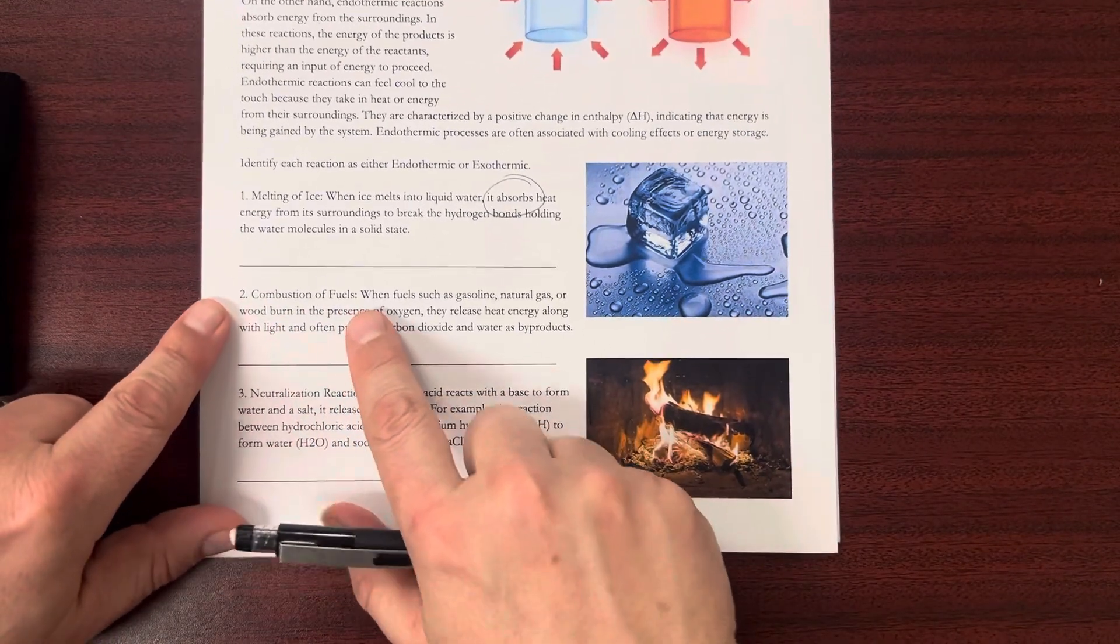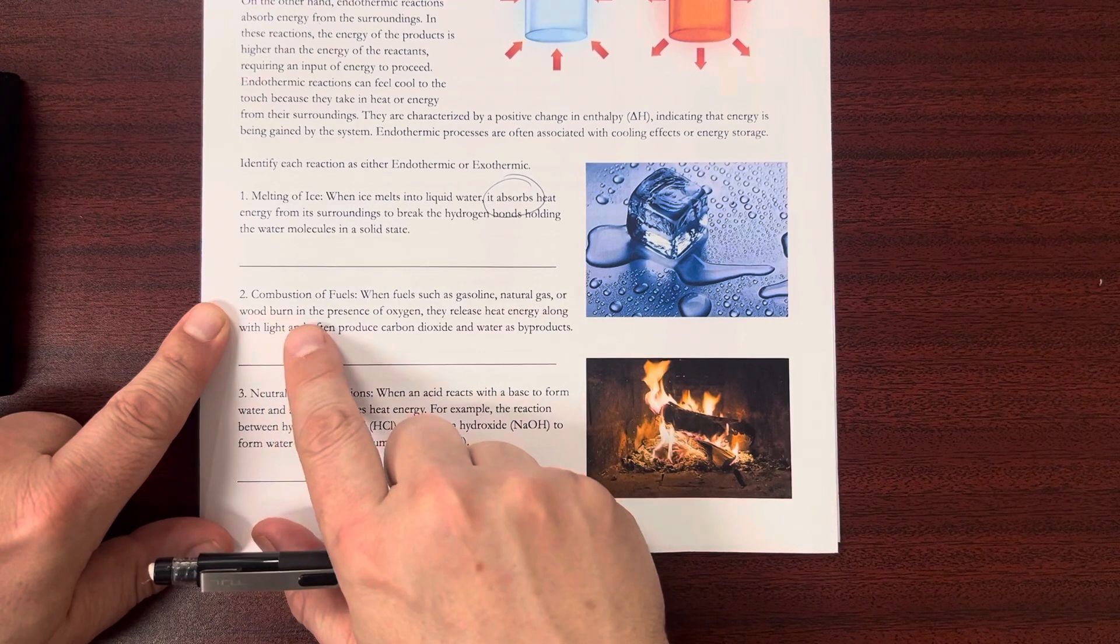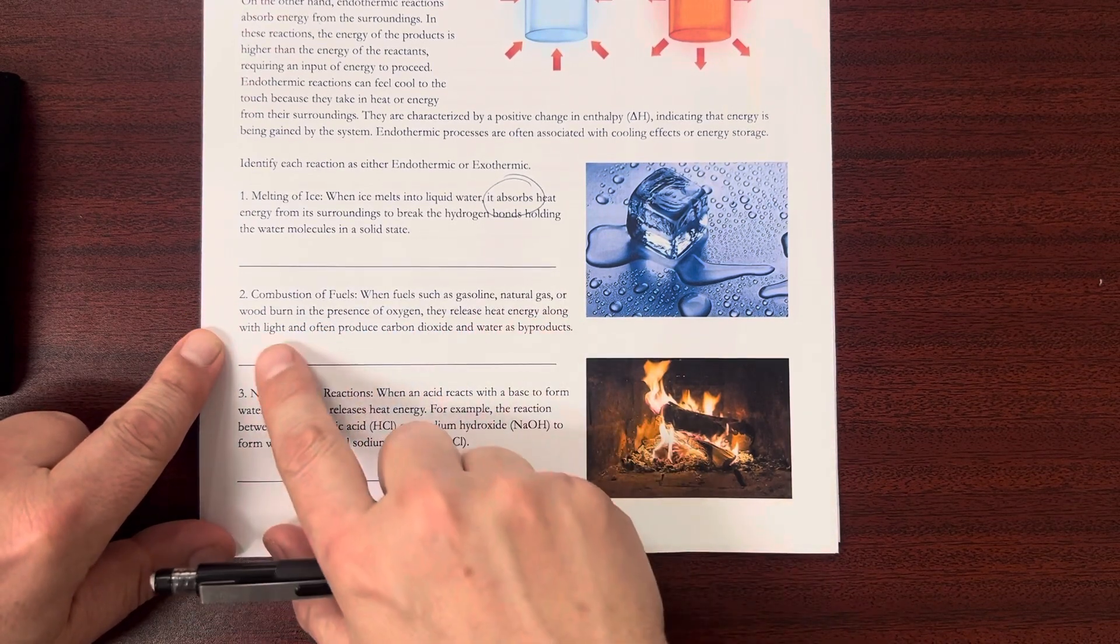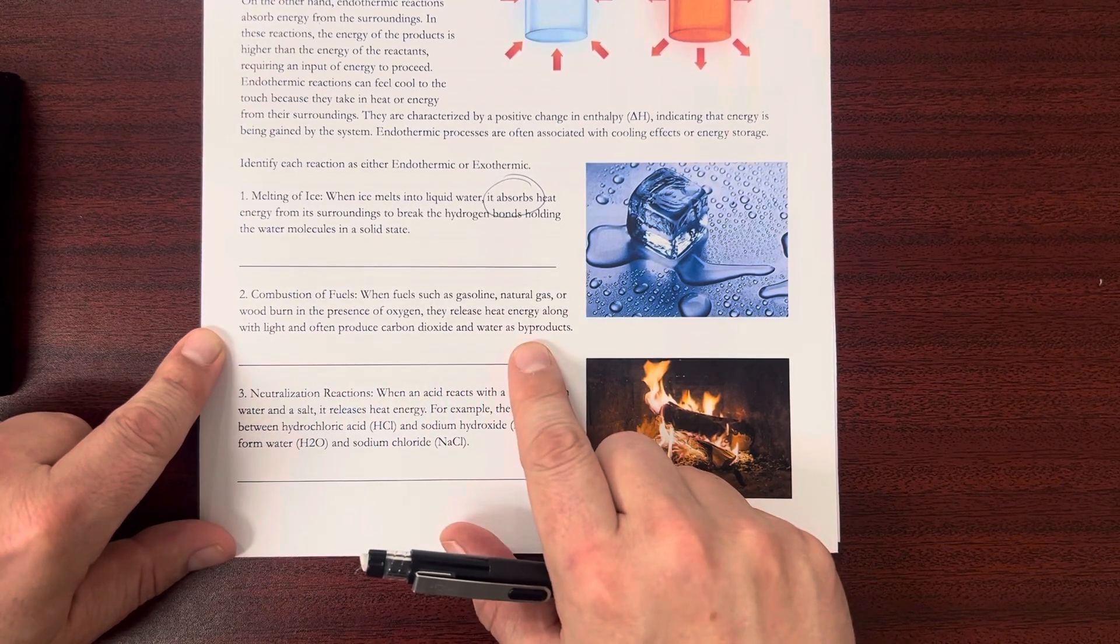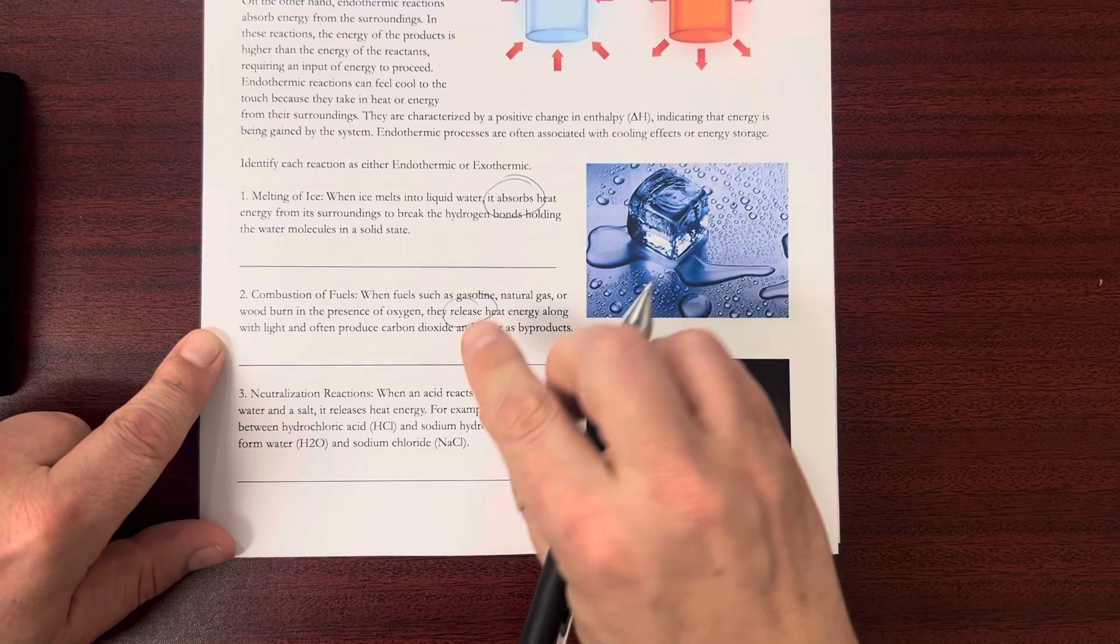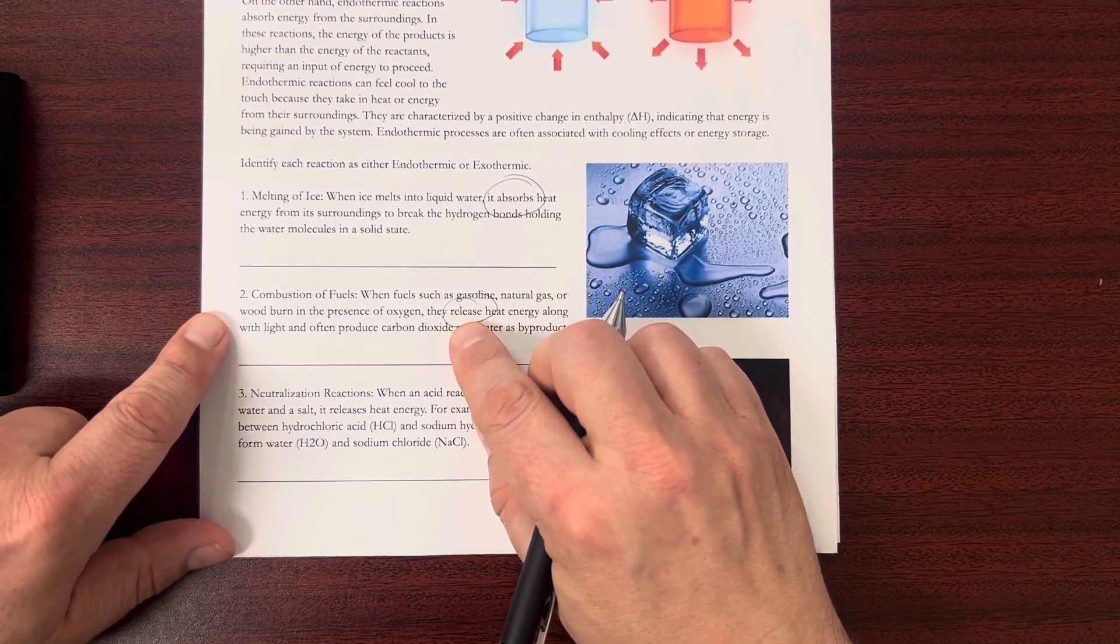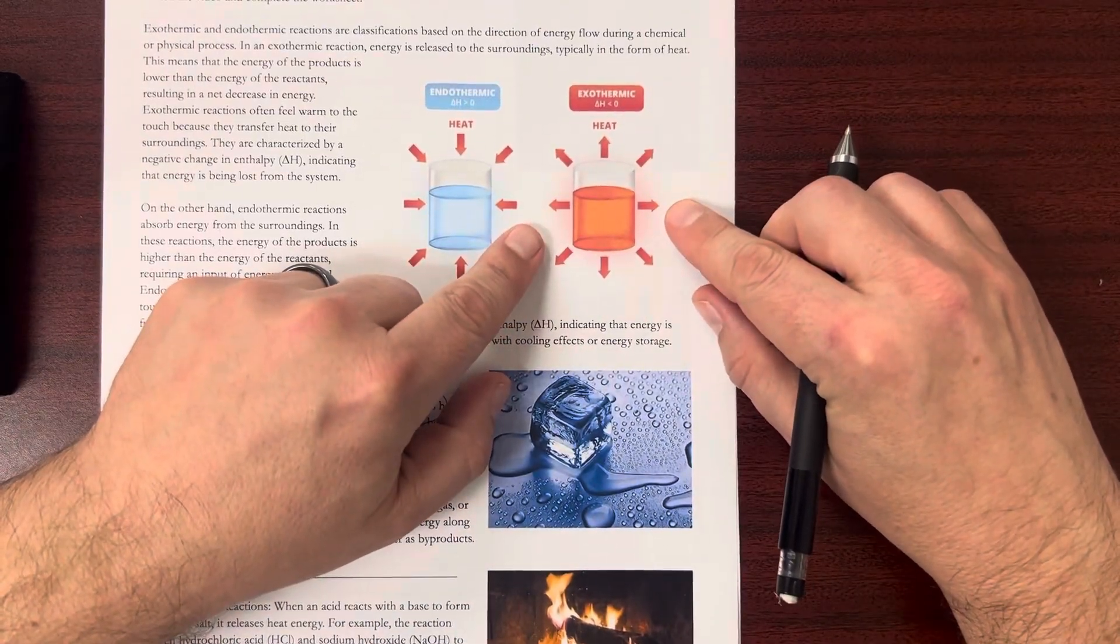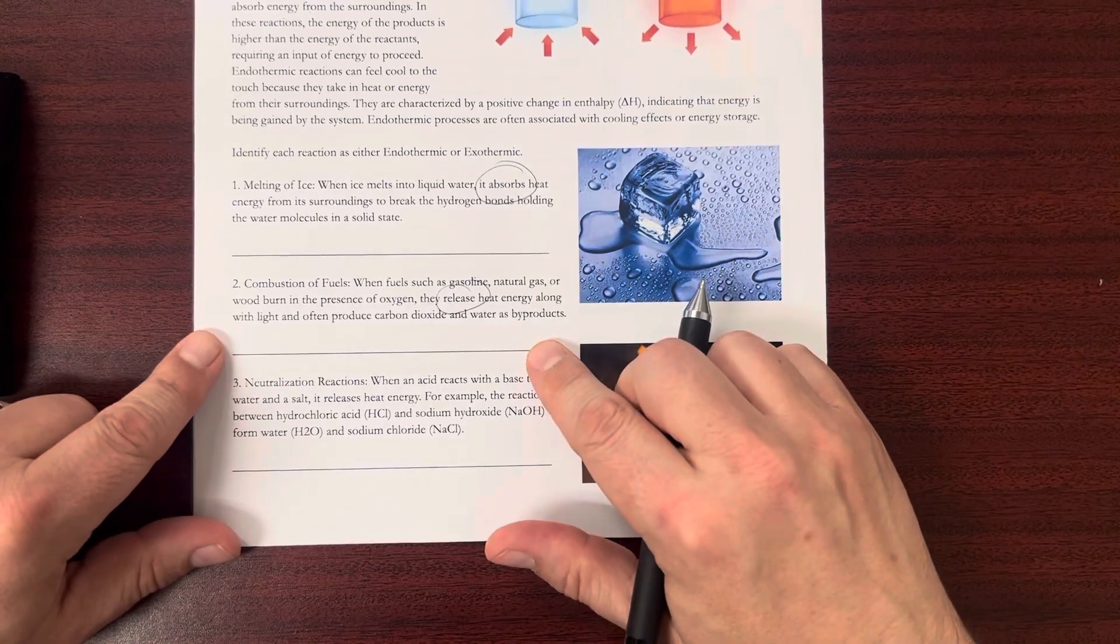Look at number two, combustion of fuels. When fuels such as gasoline, natural gas, or wood burn in the presence of oxygen, they release heat energy along with light and often produce carbon dioxide and water as byproducts. So release. It gives you an idea there, right? It gives you a little hint. If it's releasing energy, that is exothermic. And you would just write exothermic down here at the bottom.